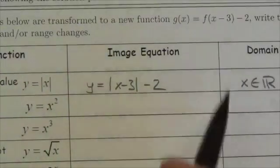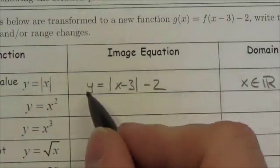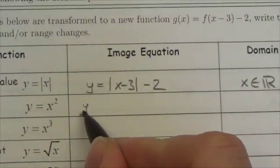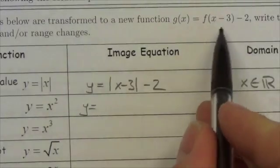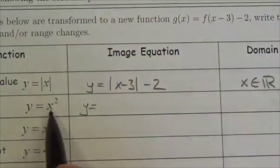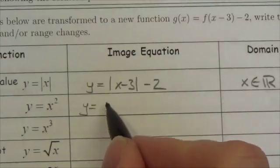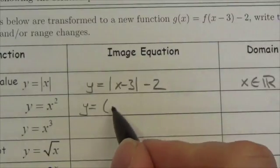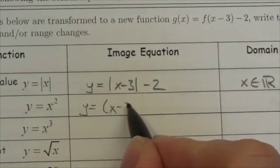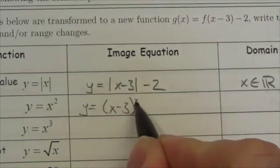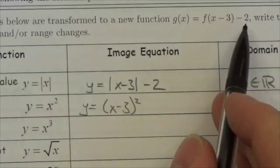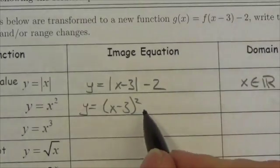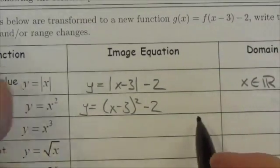So it's telling me to put the x minus 3 within the function. In this case, I'm squaring the x, so I'm going to be squaring x minus 3, and then the minus 2 happens outside the function.